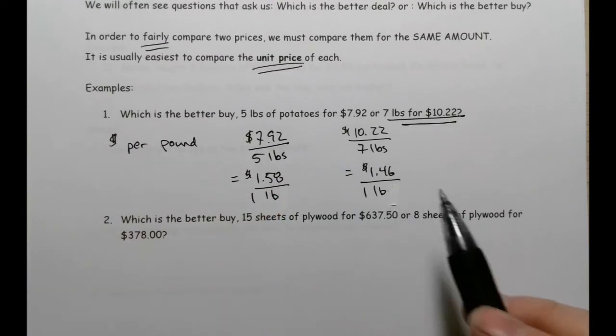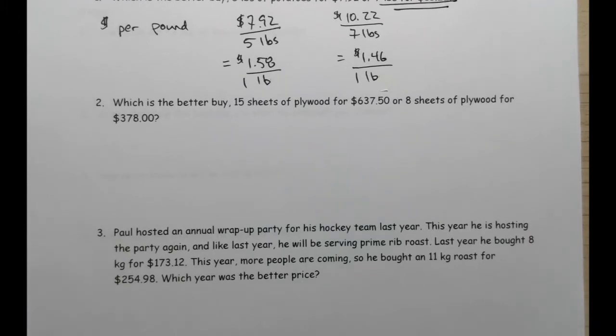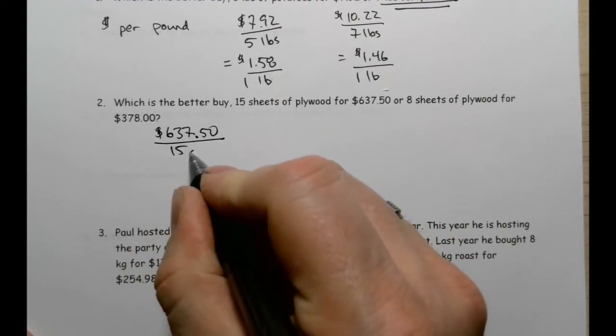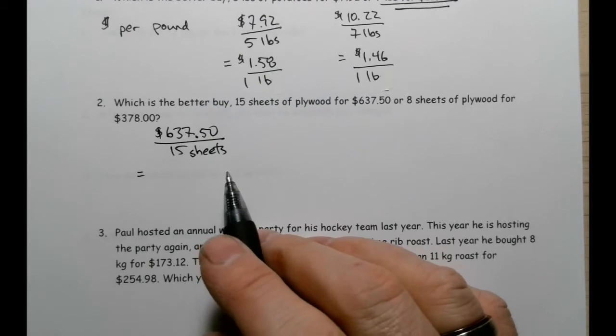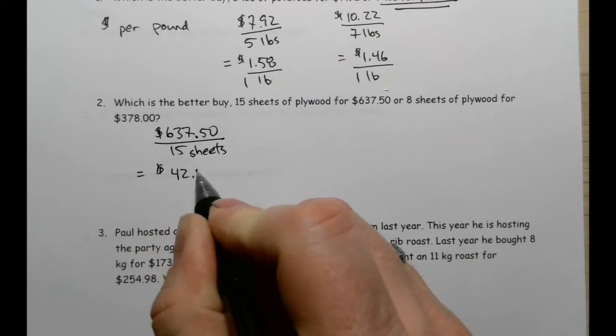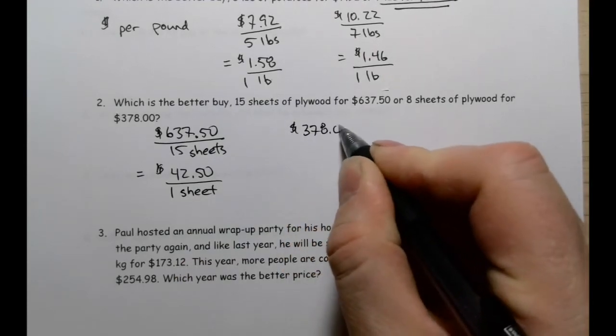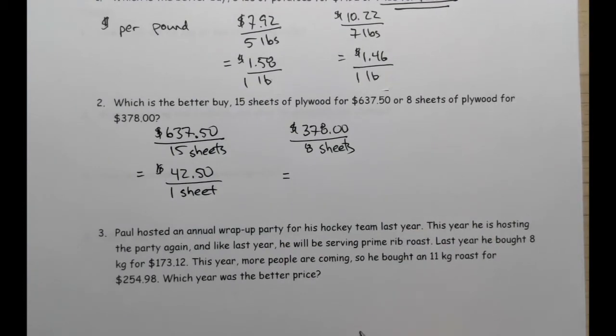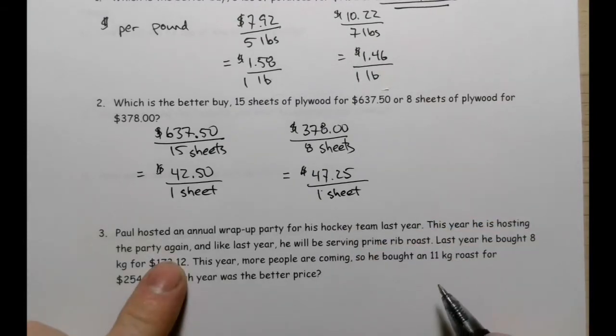Let's take a look at another one. Which is the better buy? 15 sheets of plywood for $637.50 or eight sheets of plywood for $378. And again, we want money per sheet of plywood. So we're going to start with $637.50 per 15 sheets. On my calculator, I'm going to go $637.50 divided by 15 sheets, and that's going to become $42.50 per one sheet. Now we take a look at the next one. $378 per eight sheets. $378 divided by eight, and we get $47.25 per one sheet. So which is the better buy? Well, it's that first one. $42 per sheet as opposed to $47 per sheet.